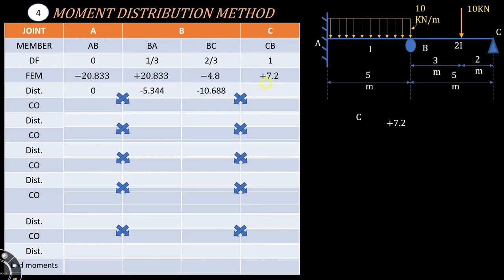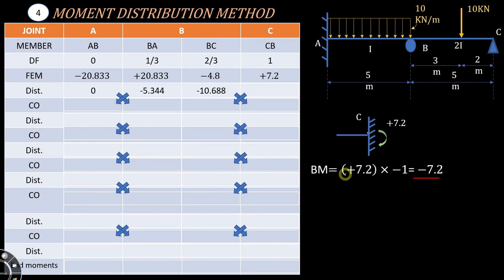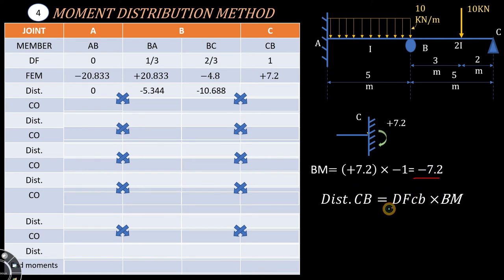At joint C, the fixed end moment is 7.2 and the balancing moment is minus 7.2 (multiply net moment by minus 1). Multiplying the balancing moment by the distribution factor for CB, which equals 1, gives the distributed moment equal to minus 7.2.